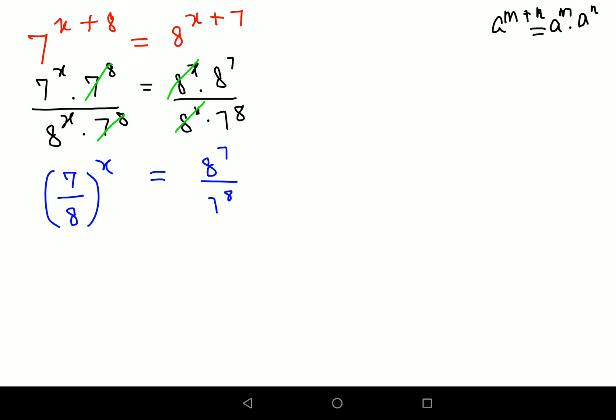Now taking log on both sides. Please understand, whenever you have an index, log of a raised to m can be directly written as m log a. So here I can directly write this as x log of 7 upon 8.